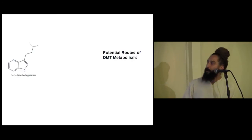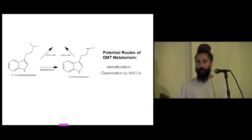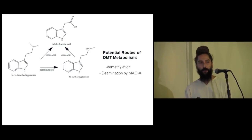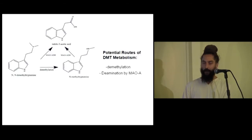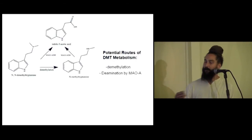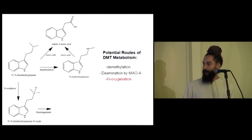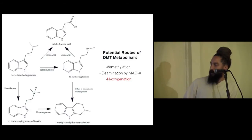Just a quick background on DMT metabolism. DMT can be demethylated to give you NMT and methyltryptamine, and it can be deaminated by MAO-A. This is the most common pathway — if you just took DMT orally by itself, it would pretty much all get converted into indoleacetic acid. The problem with using indoleacetic acid as a marker for DMT in urine or blood is that it can come from a number of sources, including N-methyltryptamine and tryptamine. It can also be N-oxygenated into DMT N-oxide, and it can be rearranged to form 2-methyl tetrahydro-beta-carboline.